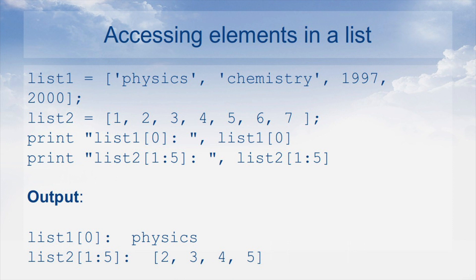Here, list 1 has elements physics, chemistry, 1997, and 2000. List 2 has members — numbers 1 through 7. When you print list1[0], the output is 'physics', that is the first element. In the second print statement, print list2[1:5] — here 1 represents the second index (since the index starts from 0) and goes up to the fifth index, so the output starts from 2, 3, 4, 5.